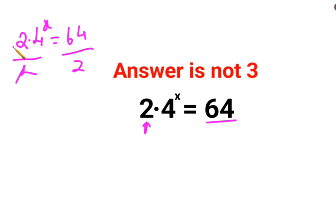So this gets cancelled and this is 1, and this is 32. So we have 4 raised to x equals to 32. Now there is a problem because 32 doesn't come in any power of 4. But what happens is 4 can be written as 2 square.